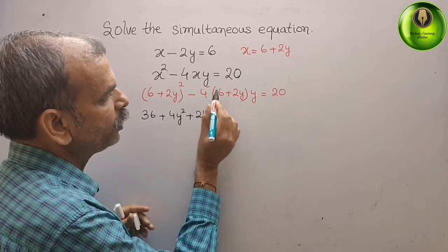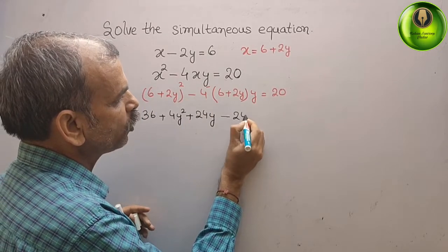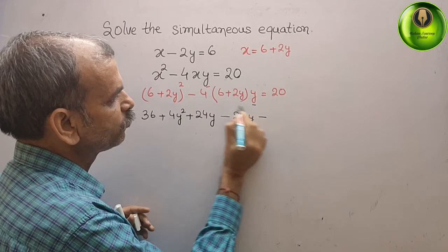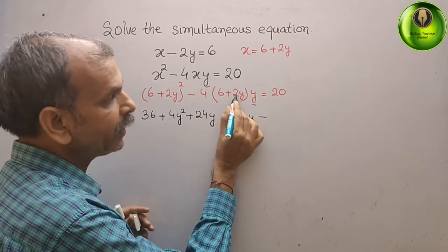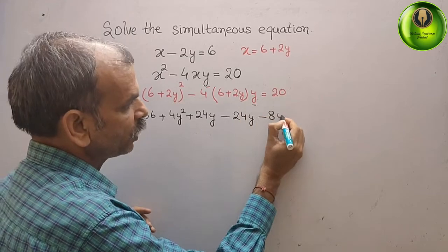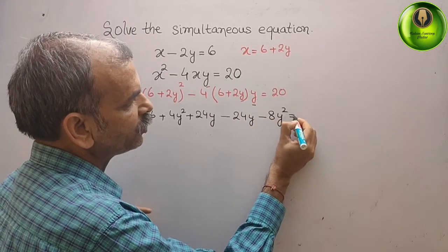Now solve this full equation: minus 4 into 6 is 24y, then minus 4 into 2 is 8, y into y is y squared. That is equal to 20.